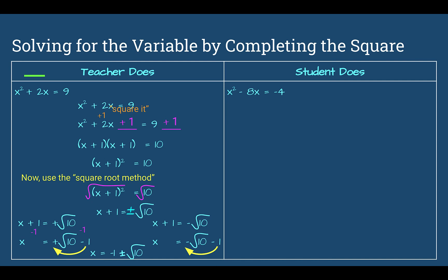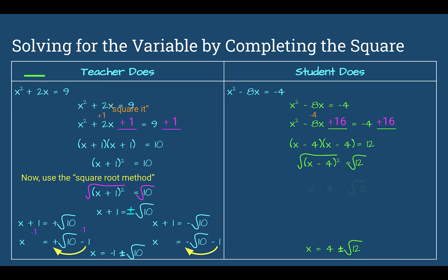Let's check. You should have got 4 plus or minus the square root of 12. Starting with the original, half of negative 8 is negative 4, and negative 4 squared is 16, so add 16 to both sides. On the left, we get x minus 4 both times; on the right, combine to get 12. So x minus 4 squared equals 12. Take the square root of both sides: x minus 4 equals the square root of 12. Add 4 to both sides, swing it out front: 4 plus or minus the square root of 12.